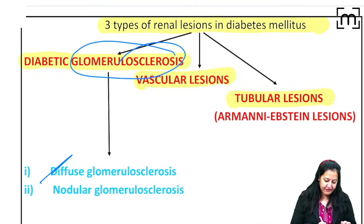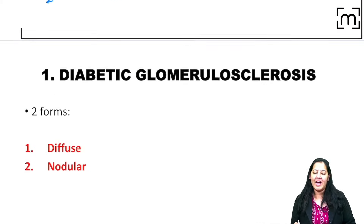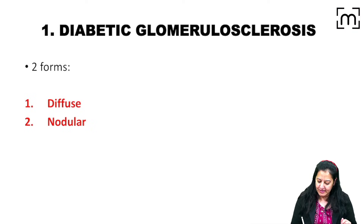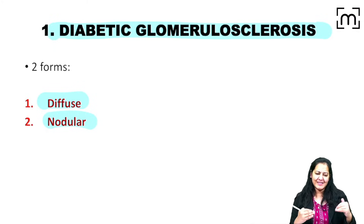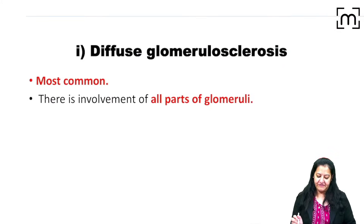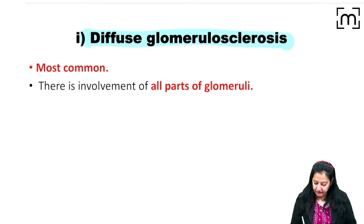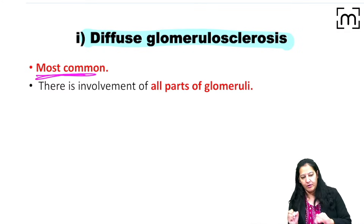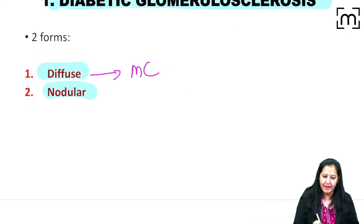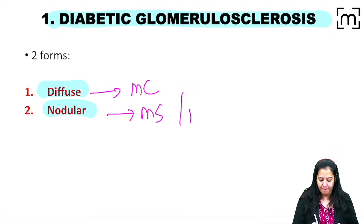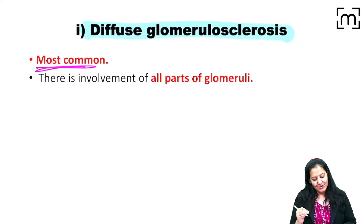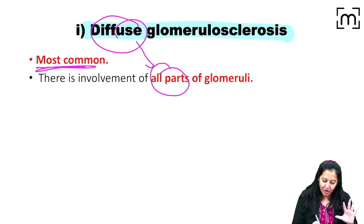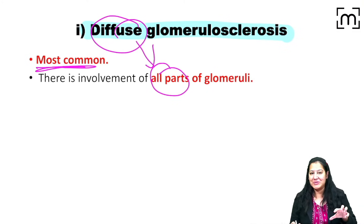In the glomerulus, there are two types of glomerulosclerosis: diffuse and nodular. Diffuse glomerulosclerosis is more common, while nodular glomerulosclerosis is more specific or pathognomonic. In diffuse glomerulosclerosis, as the name indicates, all parts of the glomeruli are involved.